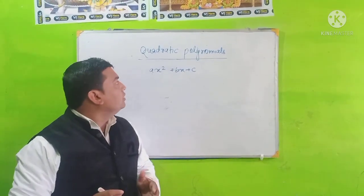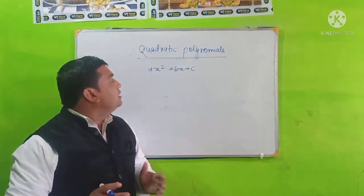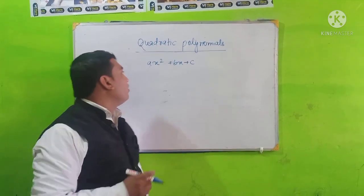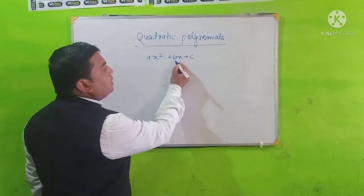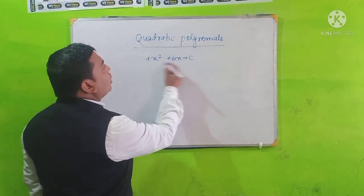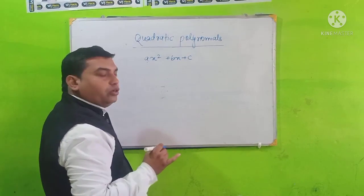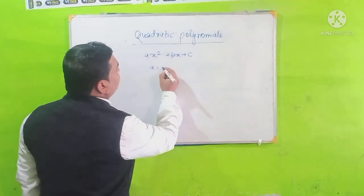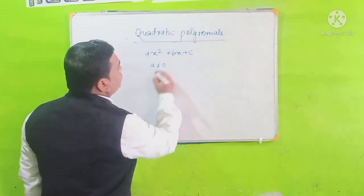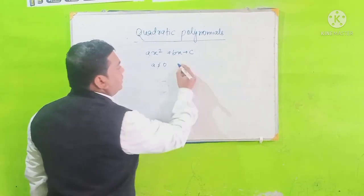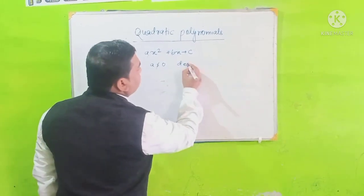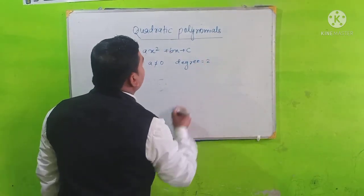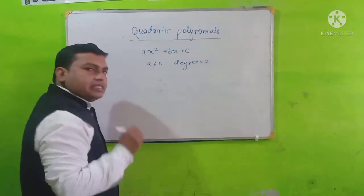Let's start to learn quadratic polynomials. Here ax squared plus bx plus c is a quadratic polynomial, where a is not equal to 0 and the degree is equal to 2.